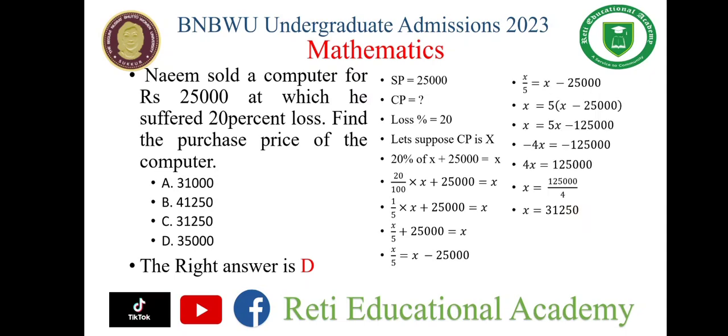X upon 5, so 5 will be multiplied to the other side: X is equal to 5 multiplied by (X minus 25,000). Expanding gives us 5X minus 125,000.